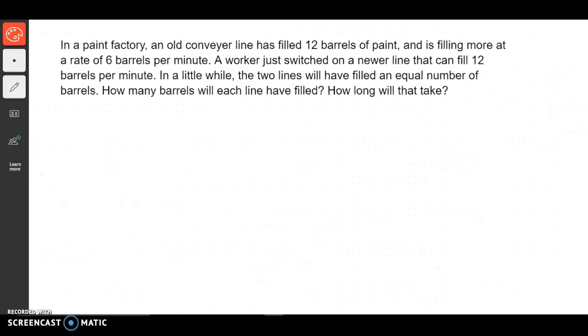Let's try another example. Again, our first thing is going to be finding our two variables. I'm going to make x and y again. We're going to read through and see if we can find them. In a paint factory, an old conveyor line has filled 12 barrels of paint and is filling more at a rate of 6 barrels per minute. A worker just switched on a new line that can fill 12 barrels per minute. In a while, the two lines will have filled an equal number of barrels. How many barrels will each line fill and how long will it take? Let's make x the time it will take and y the number of barrels, because those are the two things I'm looking for.